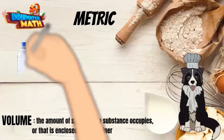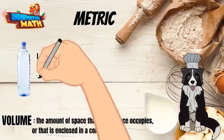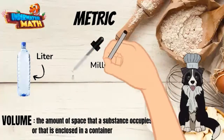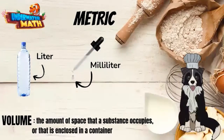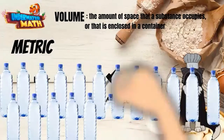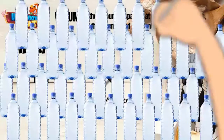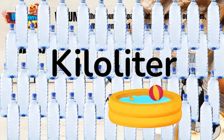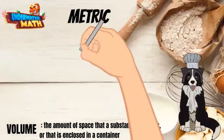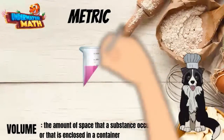Metric units are liters, about the size of a water bottle; milliliters, the size of a drop of water; and kiloliters, which is about 1,000 water bottles or one kiddie pool.